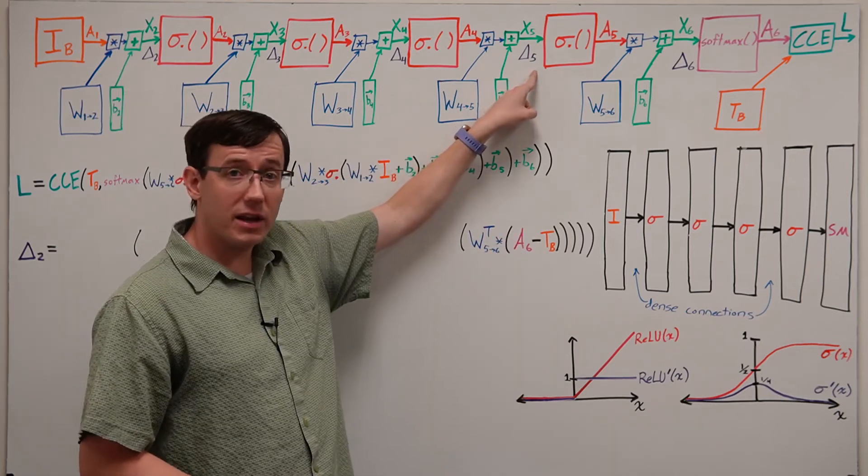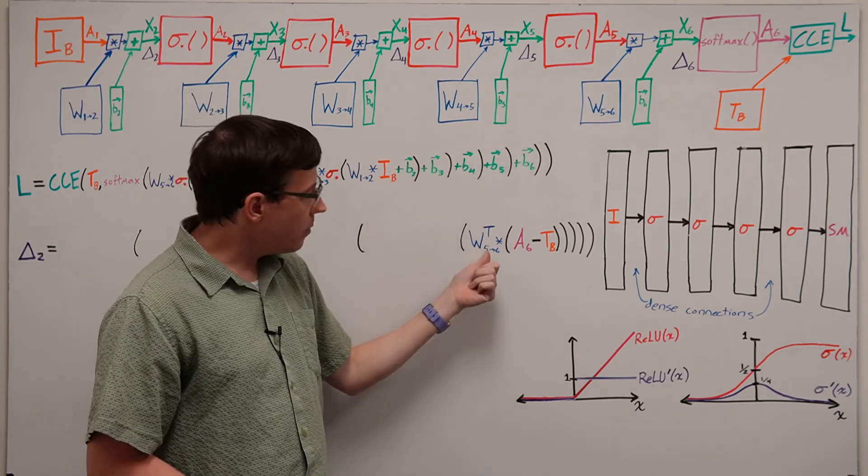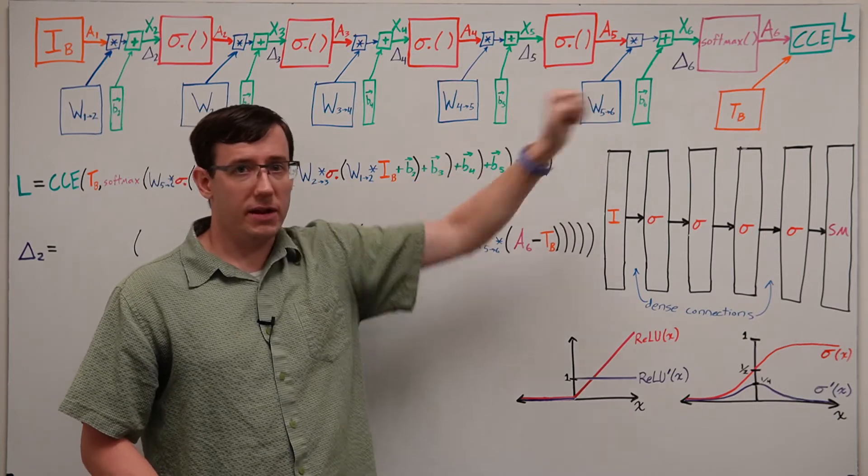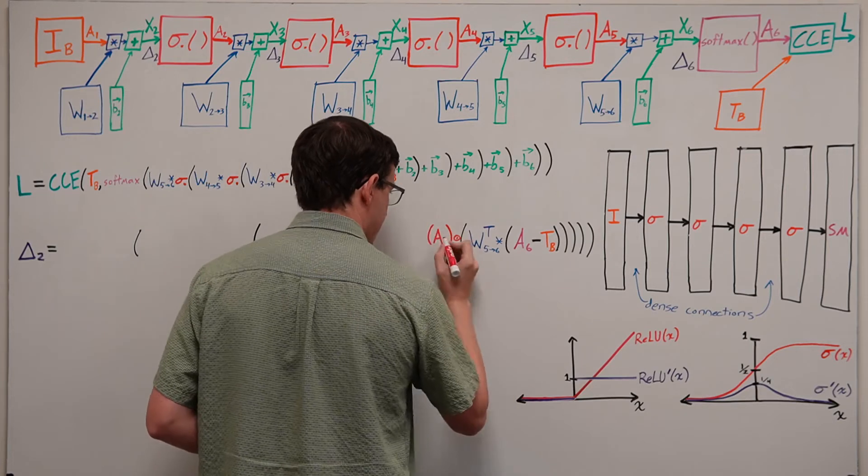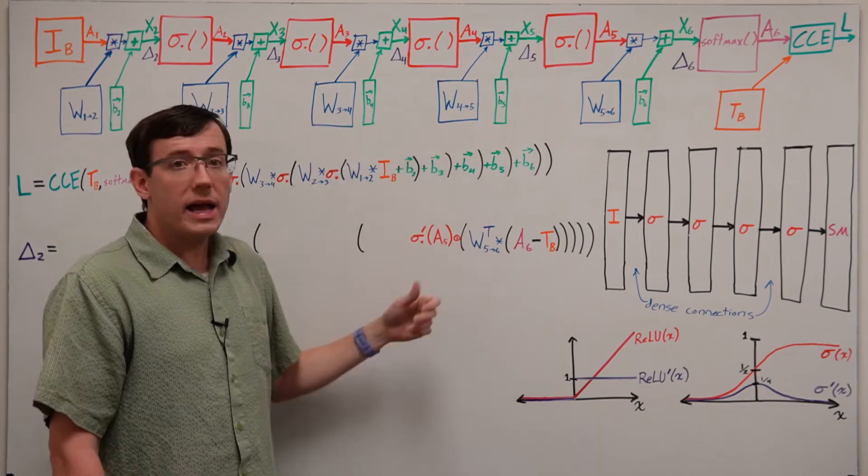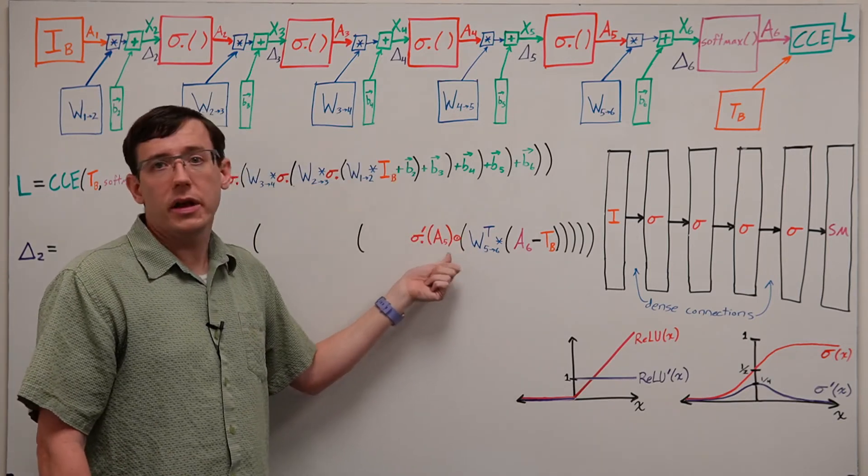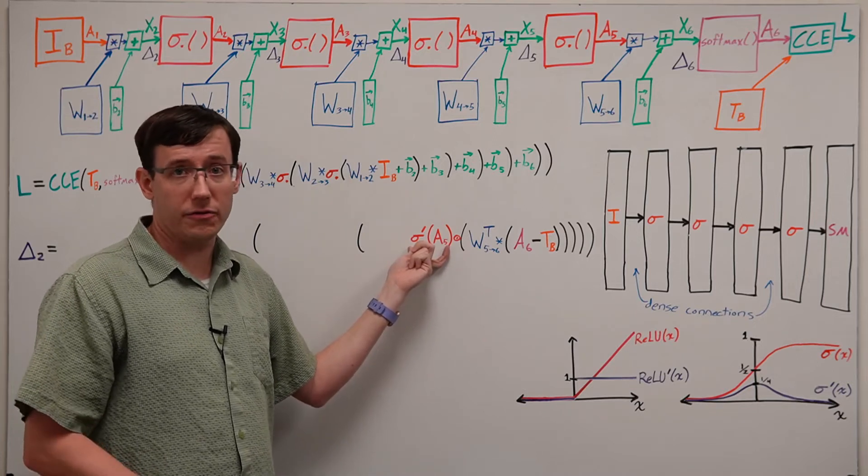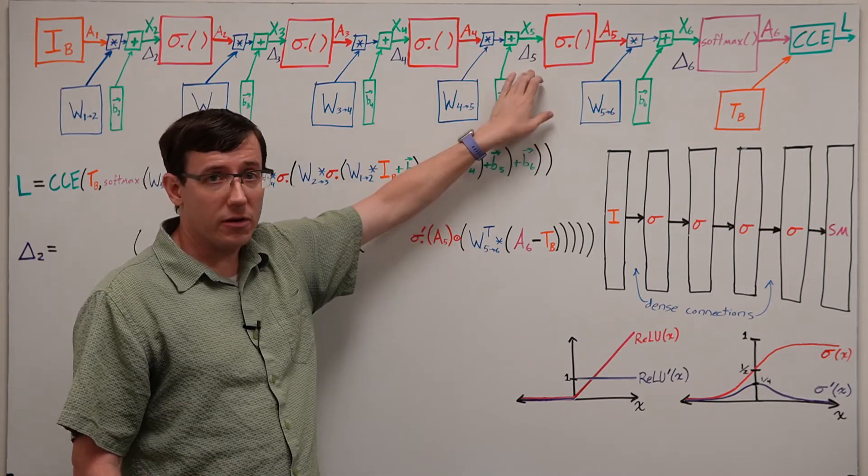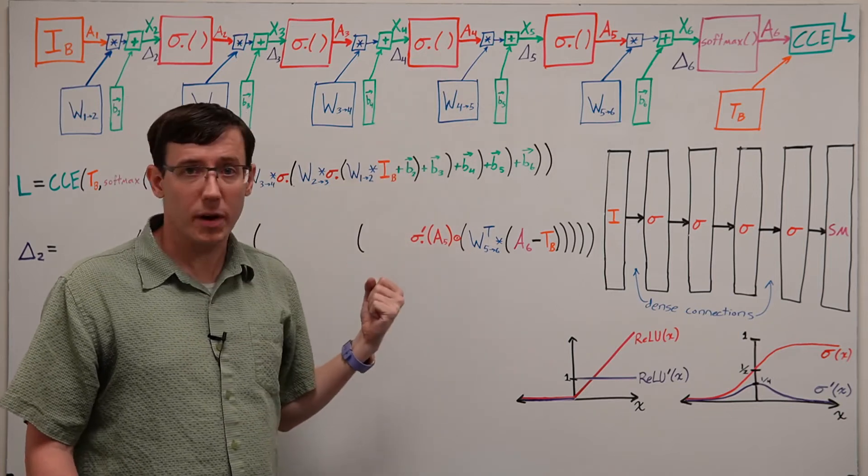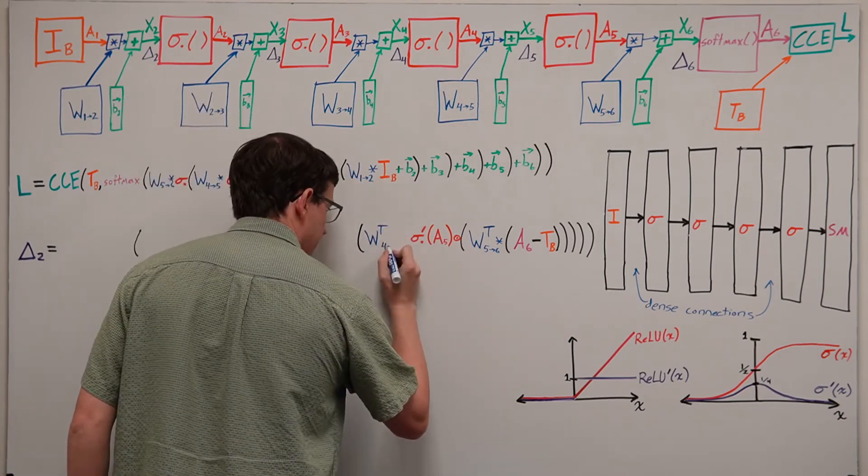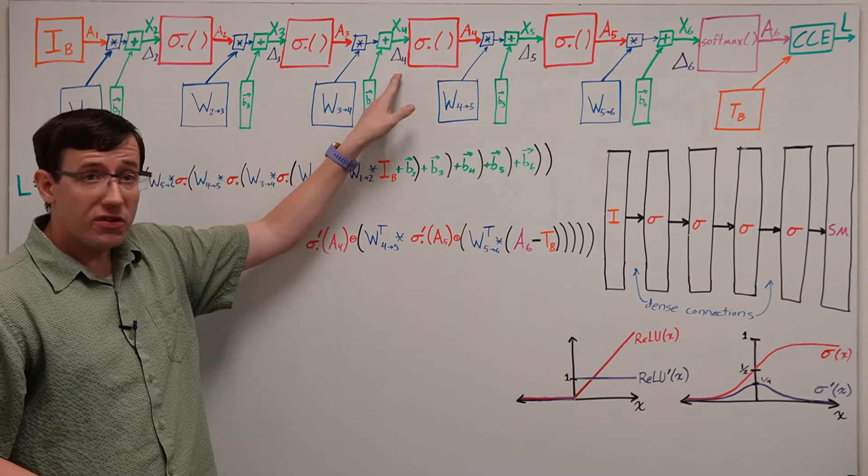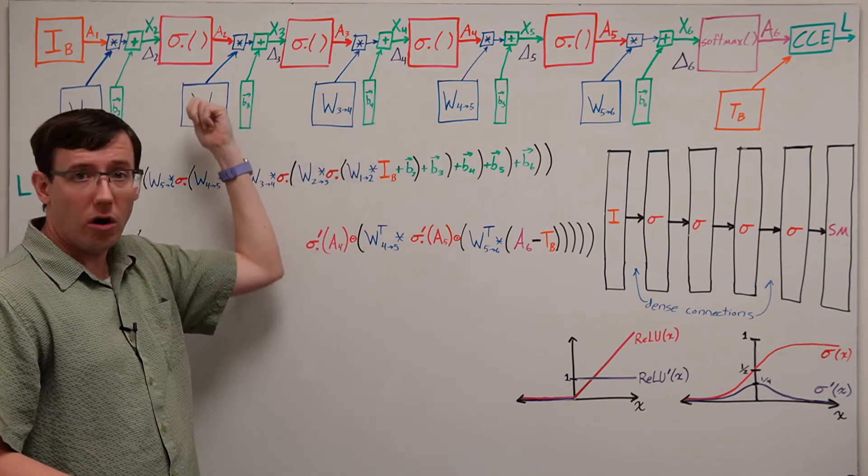So to get the deltas at layer 5, we start by multiplying with the transpose of the weights from 5 to 6, and then we element-wise multiply with the derivative of the activations for layer 5. Then to go from layer 5 to layer 4, we have the same sequence of operations. And this proceeds backwards through all of the hidden layers.